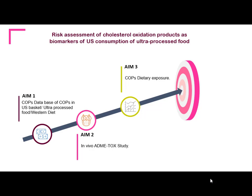With this information, we built this research study: the risk assessment of cholesterol oxidation products as a biomarker of US consumption of ultra-processed food. We have three major aims. The first aim is to build a database, because we don't know what is the real amount of COPs in these ultra-processed foods. Aim two is related to an ADMETOX study, which I will explain later. And aim three is the dietary assessment of exposure to these compounds in the diet.